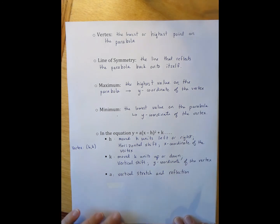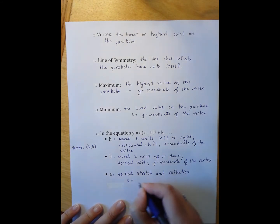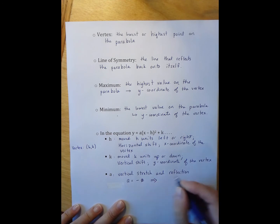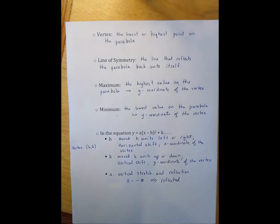A could be negative. Whenever a equals a negative number, that means that my parabola has been reflected. Meaning it now is no longer a right side up u, it is an upside down u.